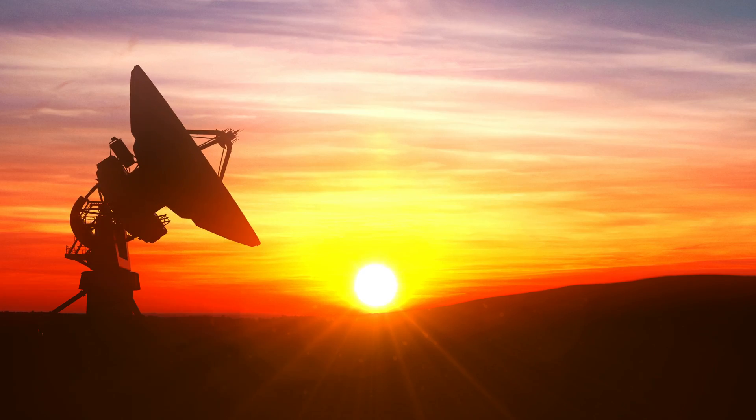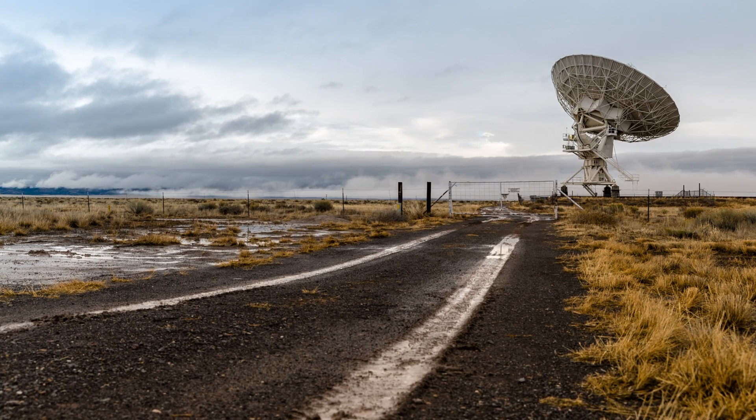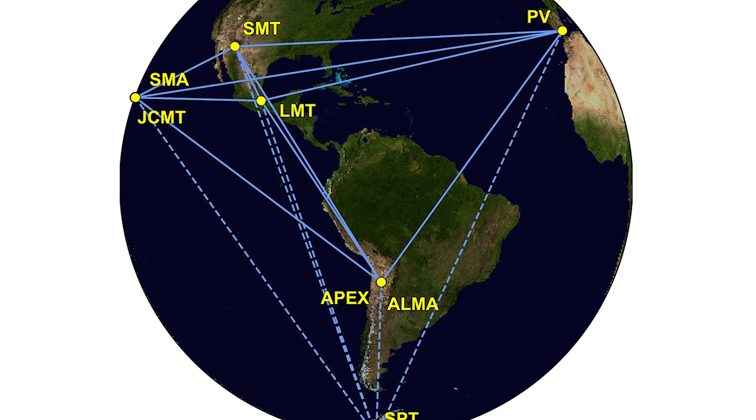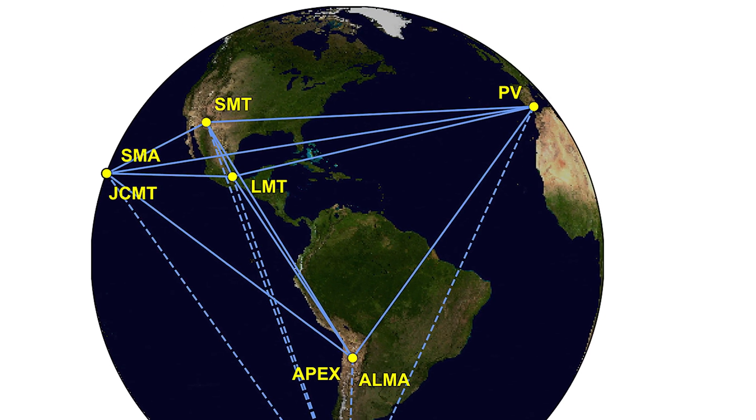Obviously we couldn't build a telescope the size of the Earth, so instead what we did is we placed telescopes around the world and put specialized equipment in those telescopes that allowed us to collect the light at each one of those locations, then bring that information together and use our computers to act like the lens to make the picture. This idea is called very long baseline interferometry, and it's been used for decades, but it had never been used on the scale of an entire globe before and at the wavelengths that we needed to see the black hole.